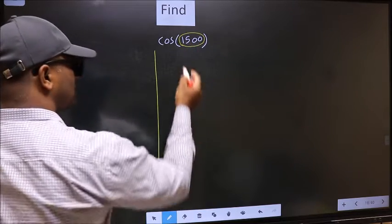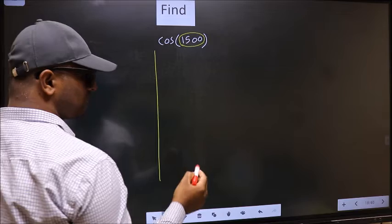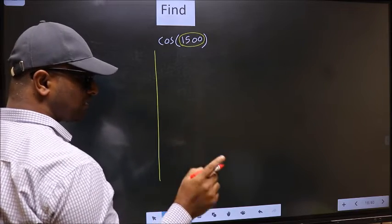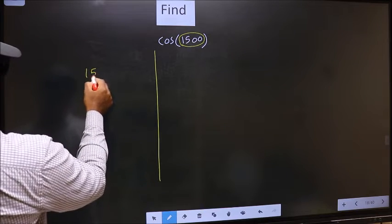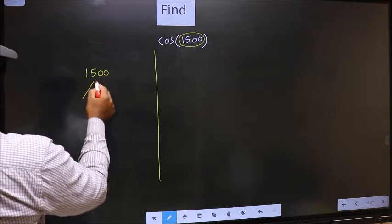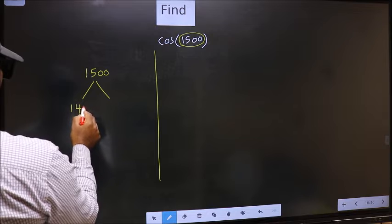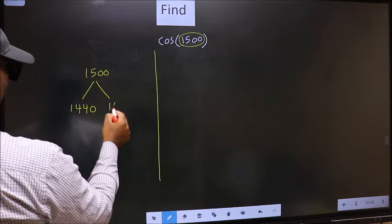Now we should check which two multiples of 180 does 1500 lie between. 1500 lies between 1440 and 1620.